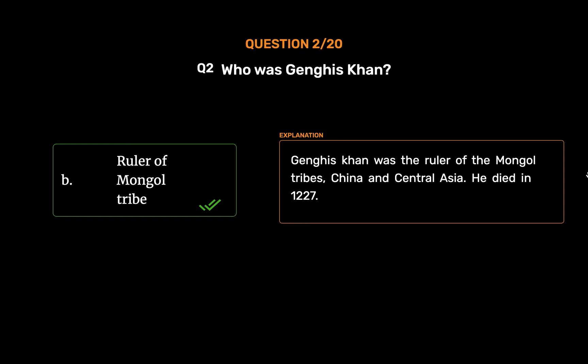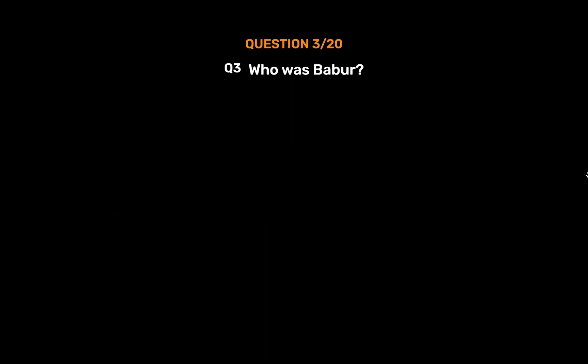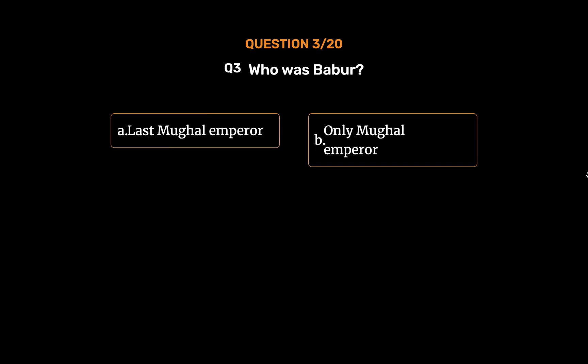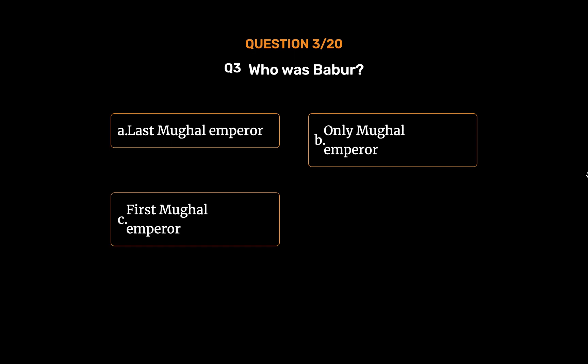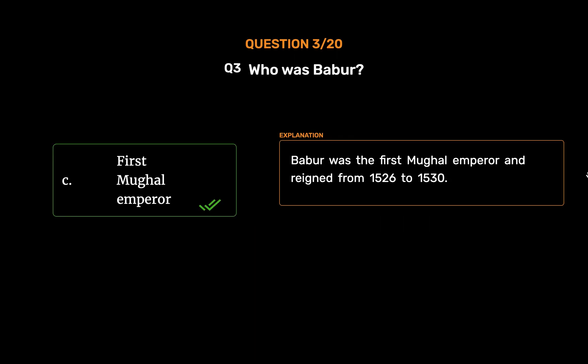Question 3: Who was Babur? Option A: Last Mughal Emperor. Option B: Only Mughal Emperor. Option C: First Mughal Emperor. Option D: None of these. The correct answer is Option C, First Mughal Emperor. Babur was the first Mughal Emperor and reigned from 1526 to 1530.